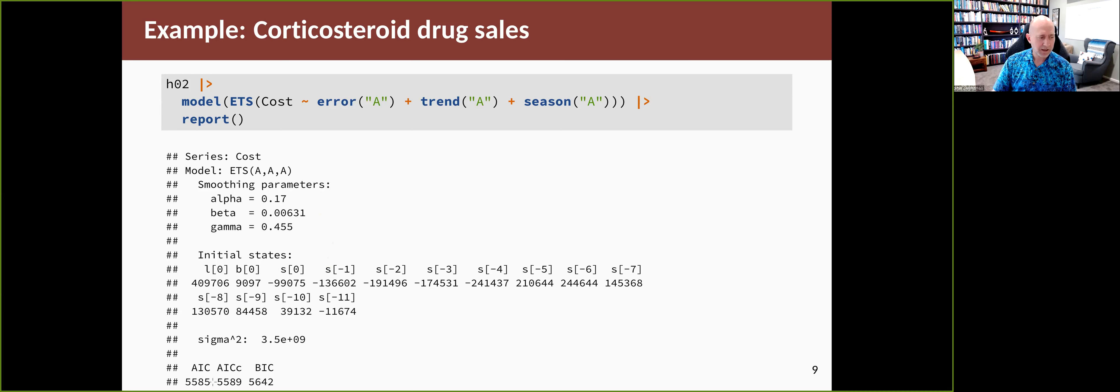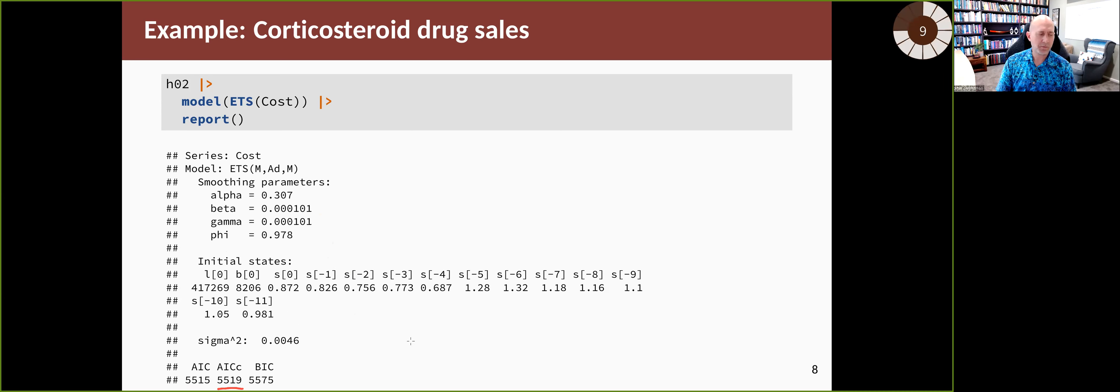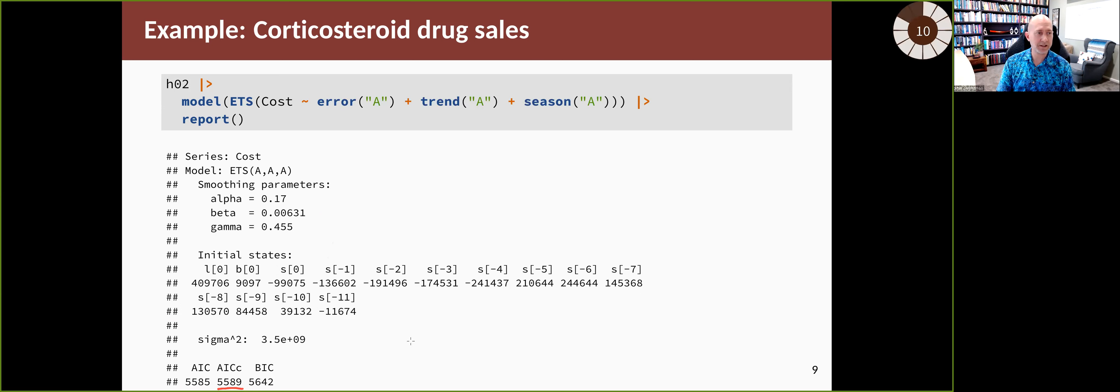If you look at the AICC value, it's quite a bit bigger than the one we had on the previous slide. So Fable is choosing the model with the smallest AICC value—it's giving us the best model because that's the model that generally gives the best forecasts. The one that we might have chosen manually is going to give us worse forecasts, you would expect, given the size of the AICC value.